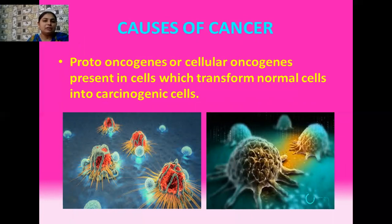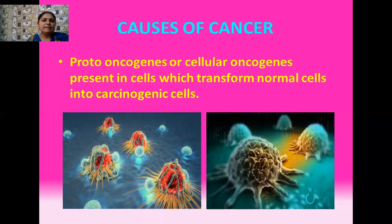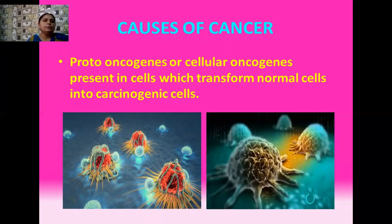Another thing that can act as a cause of cancer is proto-oncogenes or cellular oncogenes. It is believed that these proto-oncogenes or cellular oncogenes are already present in the cells of every person, and they have the ability to transform normal cells into cancerous cells. It does not always happen easily, but sometimes when these proto-oncogenes get activated, they transform normal cells into carcinogenic cells.